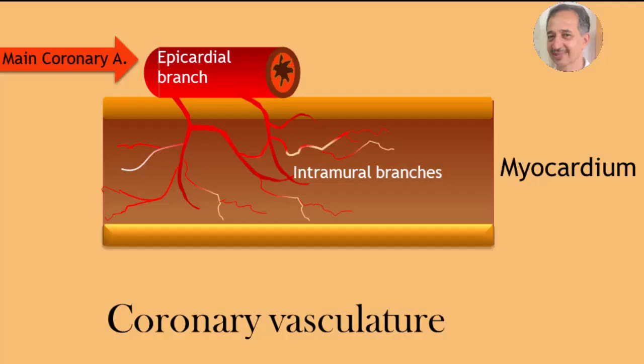The main arteries lie on the surface and branch as epicardial arteries, while very small branches penetrate the muscle mass perpendicular to the surface as intramural arteries. The capillary density is high and is greater than that in skeletal muscles. This implies that the capillaries are in great proximity to the muscle fibers and to the mitochondria, which in effect reduces the diffusion distance for oxygen.